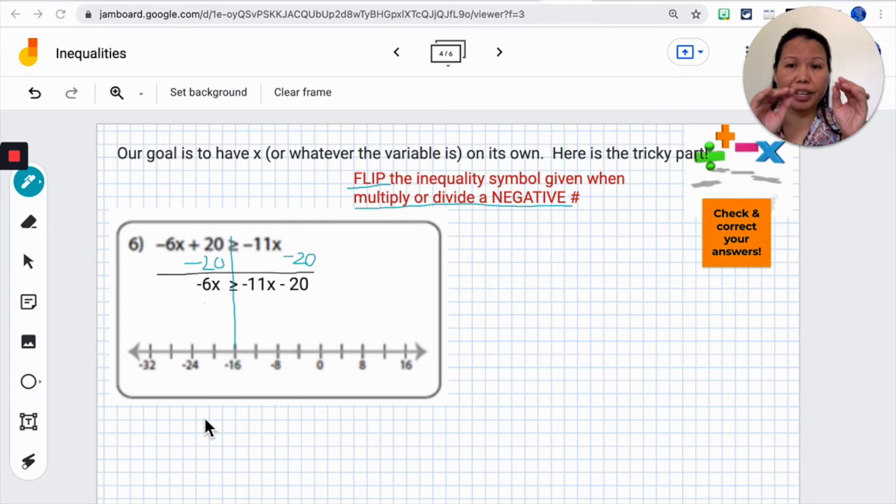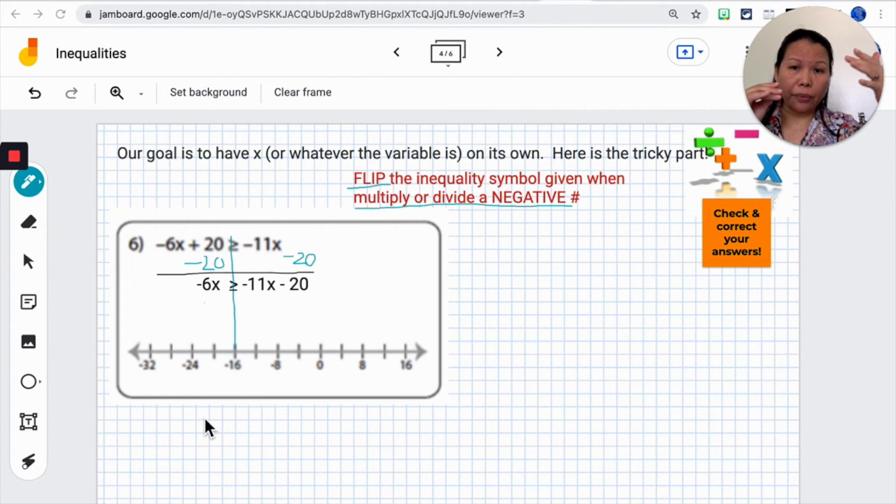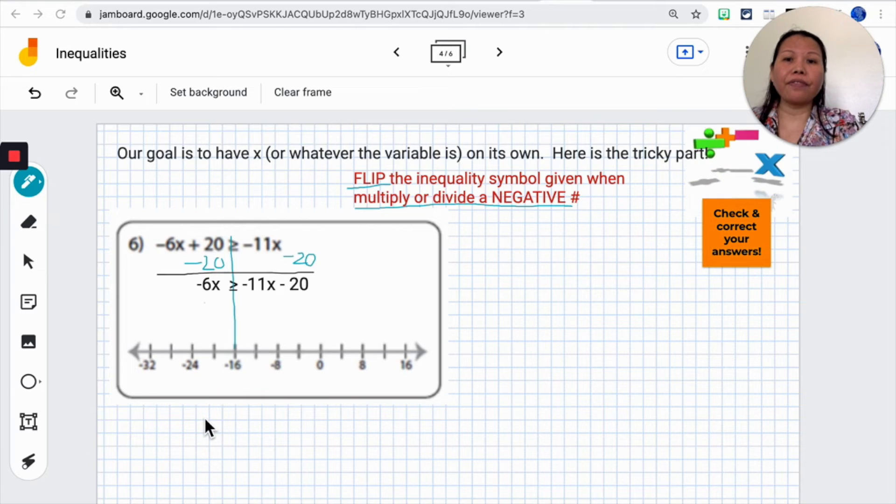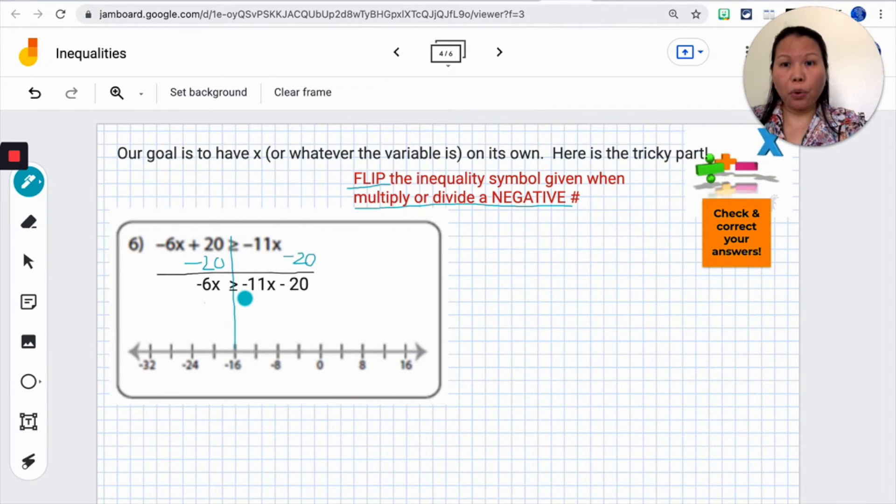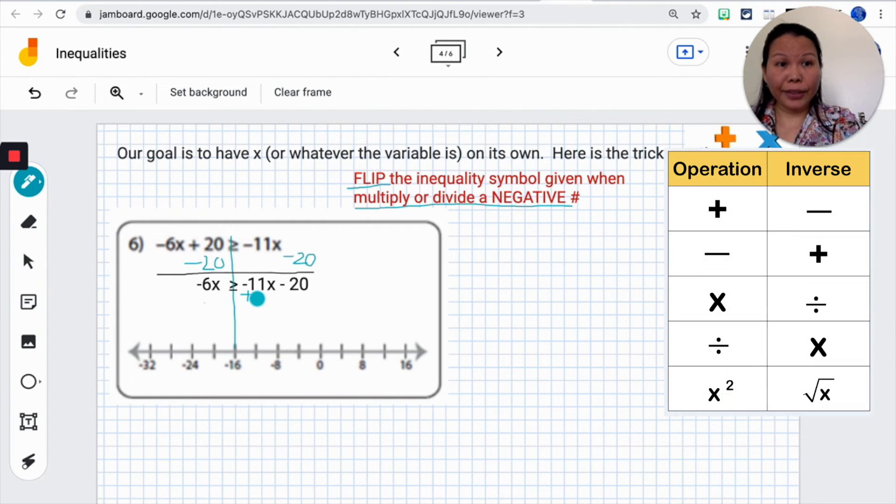Next step is to bring the like terms together, which is the negative 11x on the right hand side. I will bring it to the left. And this is the step that you could have done before you subtract 20 to both sides. To cancel out the negative 11x on the right hand side, I must add 11x and that way this will cancel out on the right hand side.